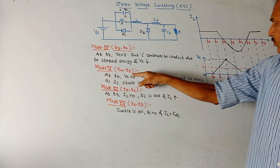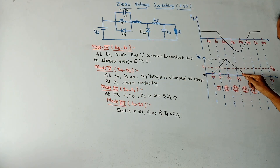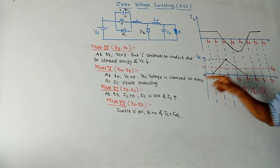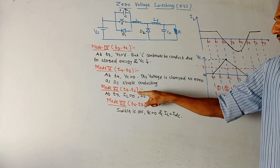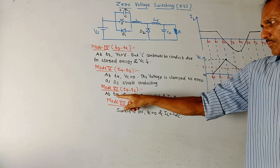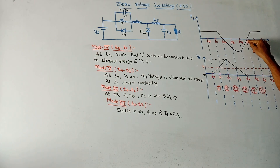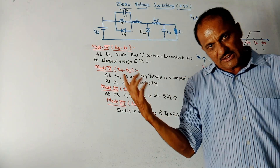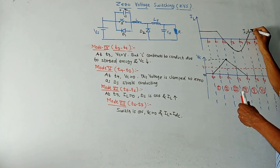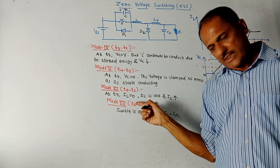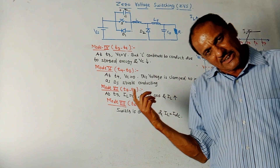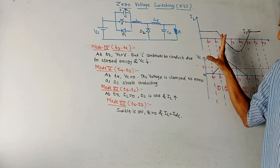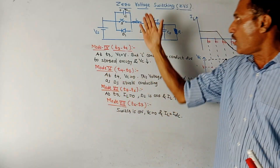Mode 5 is from T4 to T5. At T4, VC becomes 0 and remains clamped at 0 because diode D1 starts conducting. Mode 6 is T5 to T6: at T5, IL is 0 and D1 turns off, then the inductor current starts increasing and attains the value IL_DC. Mode 7 is T6 to T7: the switch is ON, VC equals 0 and IL equals IDC — the same initial condition as before T0, so the cycle repeats.